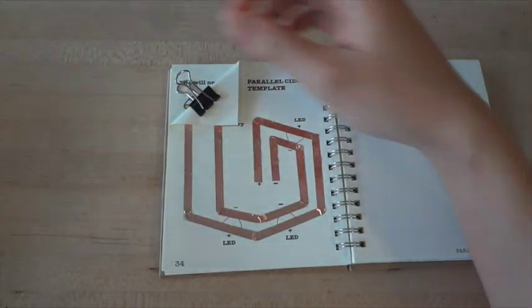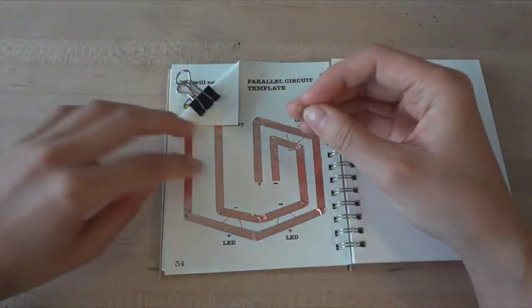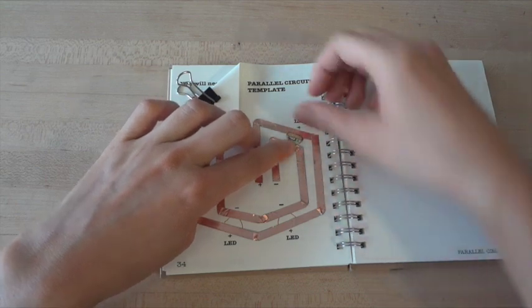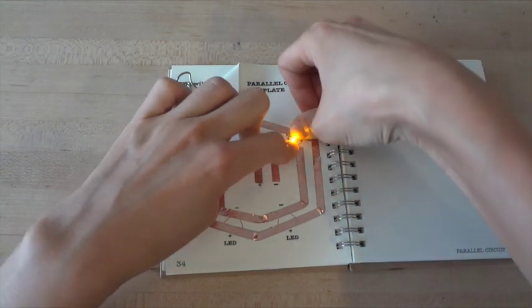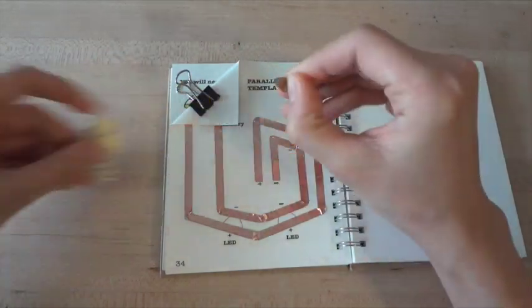Now you're ready to add your LED lights. Stick them onto the parallel tracks, pointy side facing in, so that the negative side of your LED is connected to the minus of your battery, and the positive side of your LED is connected to the positive side of your battery. You can connect as many LEDs as you'd like to this track.